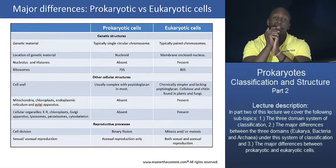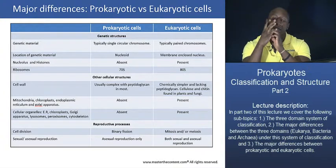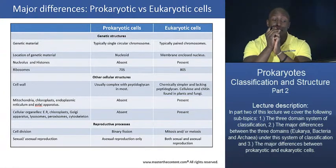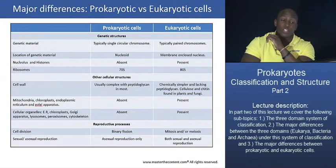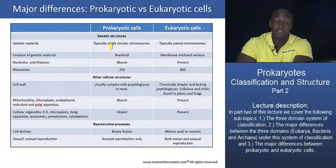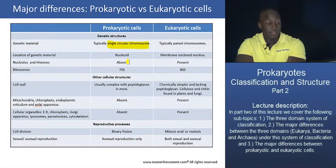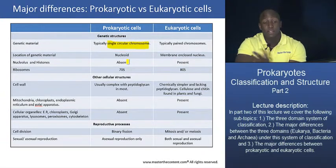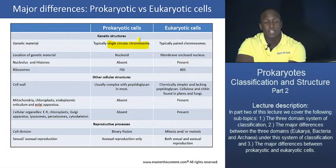When we're talking about the genetic material of these organisms, what's different? The genetic material in prokaryotic cells will primarily consist of a single circular chromosome, whereas in eukaryotic cells you're going to find them typically having varying numbers of paired chromosomes. So we have a single circular chromosome in prokaryotes and typically paired chromosomes in eukaryotes.